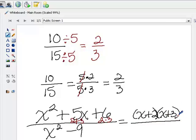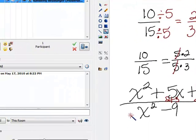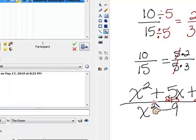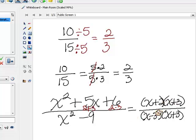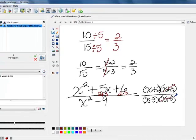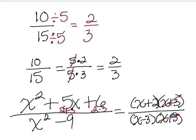Now let's look at the denominator, x squared minus 9. There's nothing in common between the two terms, but both are perfect squares: x squared is x times x and 9 is 3 times 3. Because of the subtraction, this is a difference of squares, so it factors into x minus 3 times x plus 3. Once you have both the numerator and denominator broken into factors, you can easily see the common factor of x plus 3 in both. Just like the 5's cancelled, the x plus 3's will cancel. The key is to make sure you have factored completely before you start canceling.